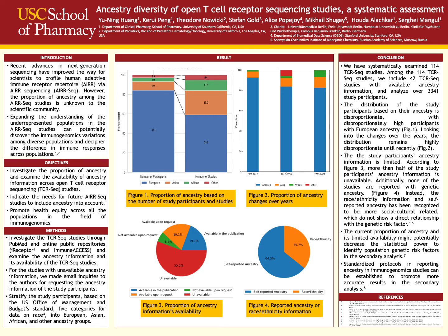In our study, we examined the proportion of ancestry and the availability of ancestry information in the field of T-cell receptor sequencing studies, to initially estimate the proportion of ancestry. We examined 114 T-cell receptor sequencing studies on PubMed and the online public repositories iReceptor and ImmuneACCESS.